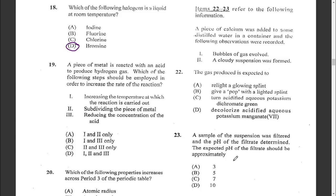Question nineteen: a metal is dissolved in acid to produce hydrogen gas. Which steps should be employed to increase the rate of reaction? Option one is increasing the temperature, option two is subdividing the piece of metal, and option three is reducing the concentration. Increasing temperature and subdividing the metal (which increases surface area) both increase the rate of reaction. So it would be one and two — answer A.